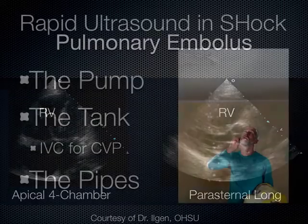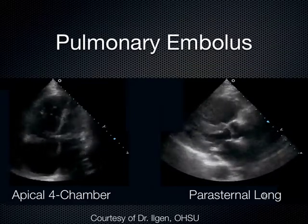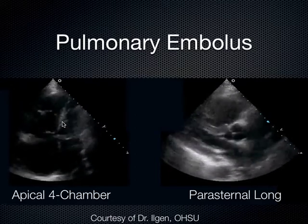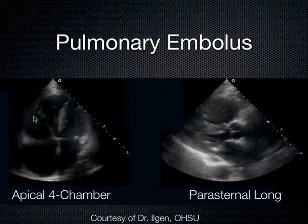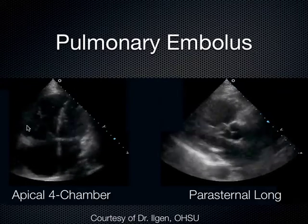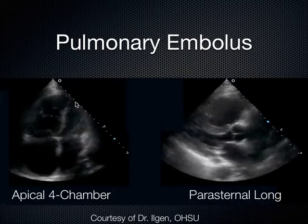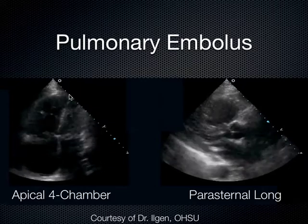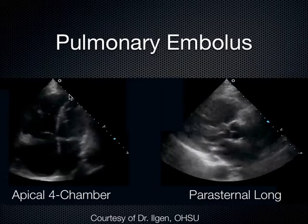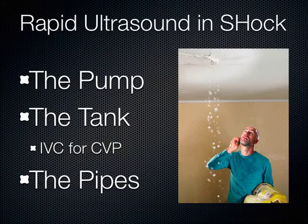Moving on from the pump. A question about the McConnell sign: the right ventricular free wall is akinetic — not doing anything — while the apex is still contracting. That's a classic, cool example. Now we move to the tank.